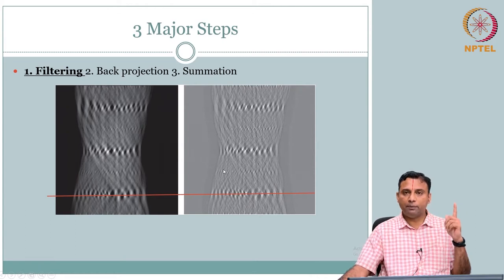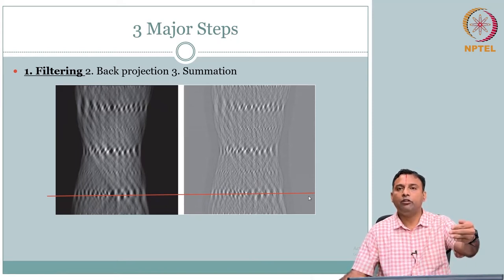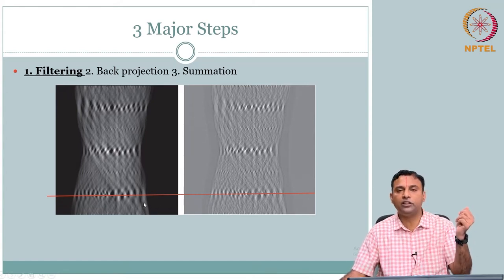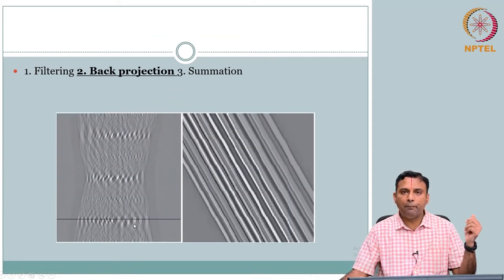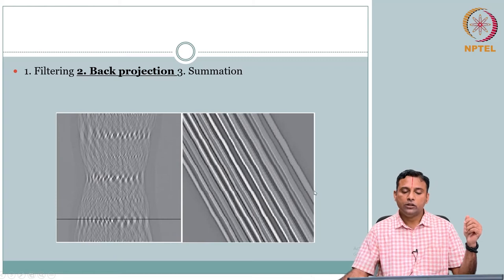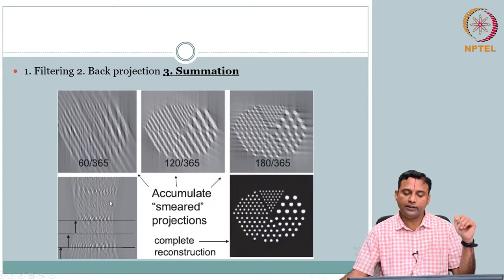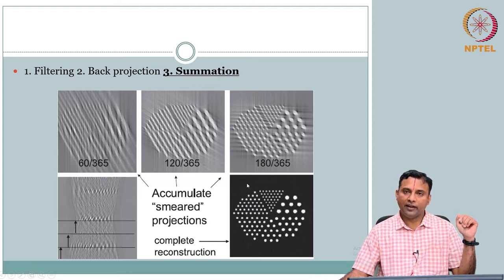This is a filtered version. The second step: for each view angle, you have a projection — now filtered — and you have to back project it in the field of view along the orientation in which it was acquired. We took a particular angle, say theta=30 degrees as an example. You take the projection along that line and project it back along the field of view at that angle. This is your back projection — same as before, but now starting with filtered projections. Then finally, summation. Each back projection image itself is lousy, but when you start to add them — the more you add — you get the final reconstructed image.